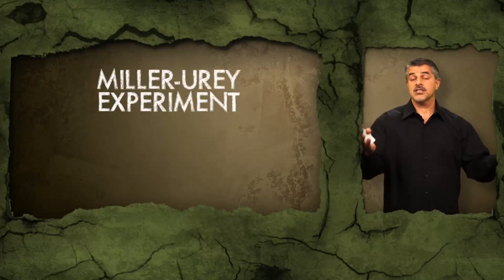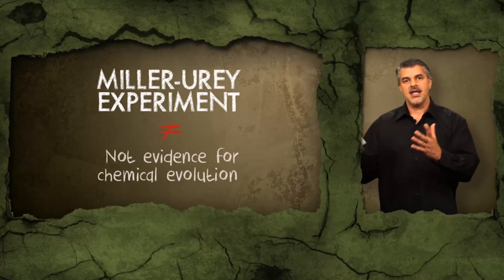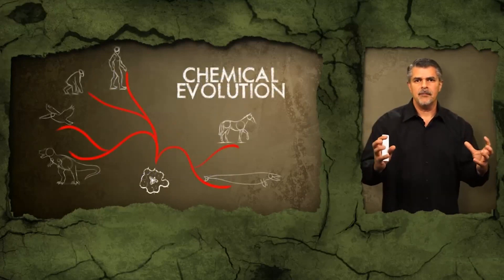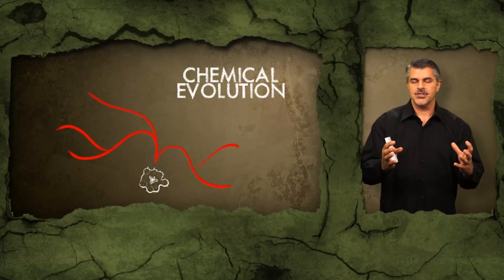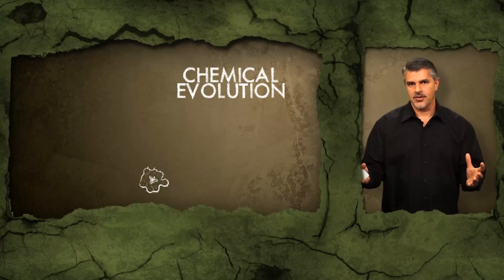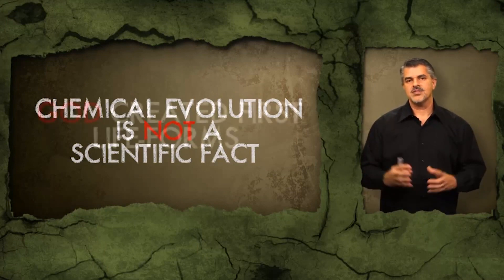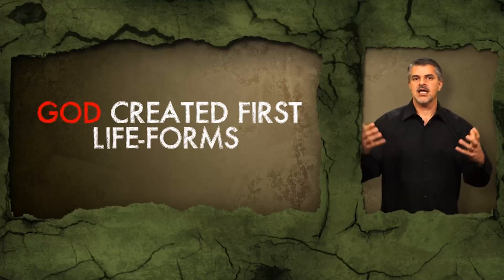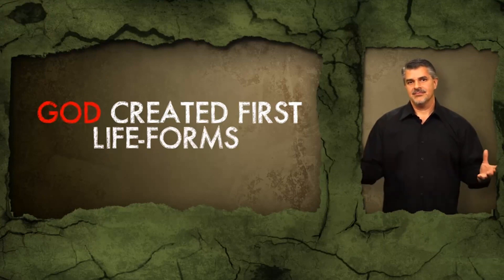The Miller-Urey experiment is an interesting scientific experiment, but it has no relevancy to the conditions of the early Earth and therefore is not evidence for chemical evolution. Chemical evolution — the origin of life scenario, abiogenesis — is a cornerstone idea in the evolutionary paradigm, and yet scientists cannot establish with any scientific certainty that life came from non-life through undirected chemical and physical processes. So if a Christian takes the view that God is responsible for creating the very first life forms, that is a scientifically reasonable position to take.